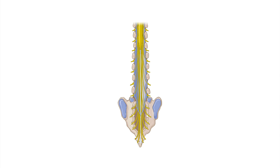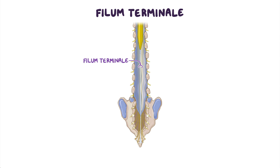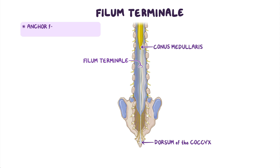There is also another important structure within the distal portion of the vertebral canal called the filum terminale. It extends from the conus medullaris and descends among the nerve roots of the cauda equina to attach to the dorsum of the coccyx, acting as an anchor for the spinal cord within the vertebral canal.